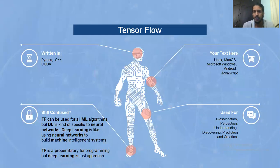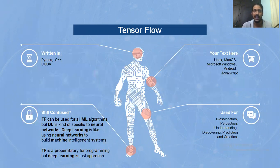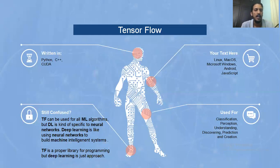If someone asks what you will be achieving using TensorFlow or machine learning — basically, it's used for classification of good volumes of data. We're not talking about 20 to 30 entries or even 200 to 2000 entries; we're talking of huge entries. You also have perception, discovery, prediction, and creation. We'll talk about all of these in detail in the upcoming slide. So if you're still confused about what TensorFlow does, and whether it is only for machine learning or also for deep learning — let us talk about it right now.